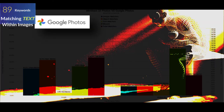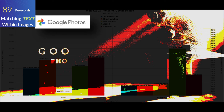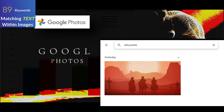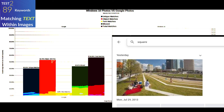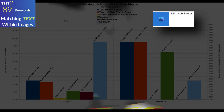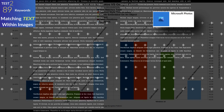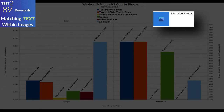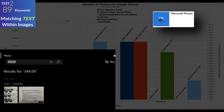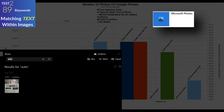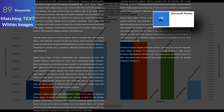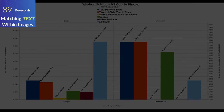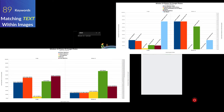To sum it all up: Google is the dreamer, the philosopher, the abstract thinker, the artist — if you're looking for stuff in that type of arena, Google Photos image recognition is worth a look. But Windows 10 is the data analyst, the reader, the accountant or the lawyer. If you're pouring over scanned documents or photographed images of labels, barcodes, and ingredient lists, Windows 10 is much more successful at finding typeset-style text.